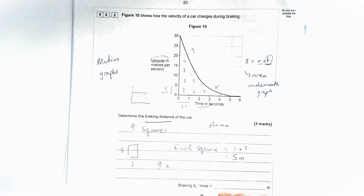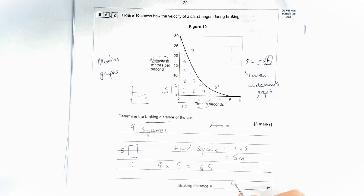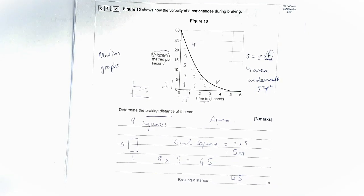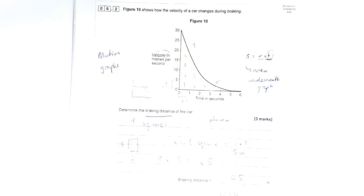So that's going to be our braking distance. There's leeway — I think you can go from 42 to around 50 for this, depending on how many squares you counted. The important thing to know is that you have to use this method; you can't just do one calculation.